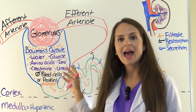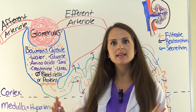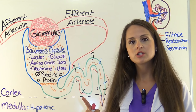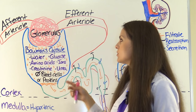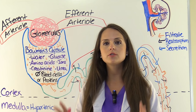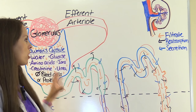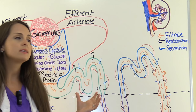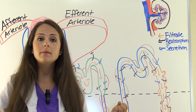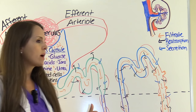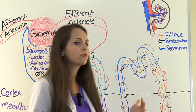Now let's take a closer look at the nephron. I like to divide it into two sections based on function. The first section is the renal corpuscle, which includes the glomerulus and Bowman's capsule — they work together to filter the blood. The second section is the renal tubules, which play a role in reabsorption — taking substances out of the filtrate and putting them back in the blood — and secretion, where the peritubular capillaries secrete substances into the filtrate to be excreted through the urine.